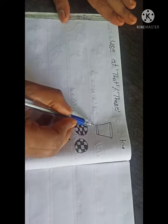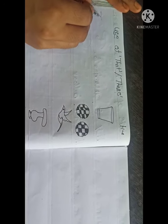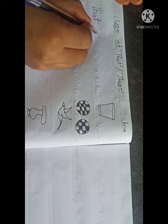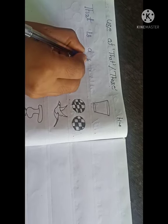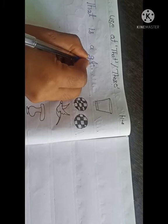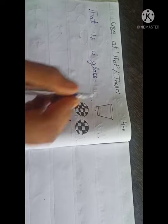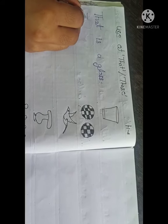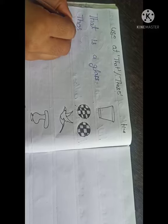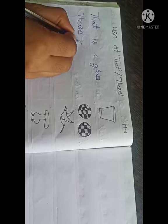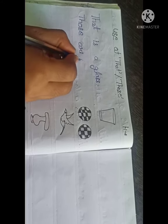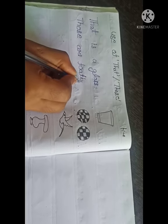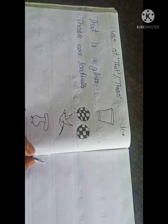First of all, what will we do? We will use that and those. That, T-H-A-T, that is a glass, G-L-A-S-S glass. Now one more thing is going on. And now this is our homework, we will use that and those. T-H-O-S-E those, A-R-E are, football, F-O-O-T-B-A-L-L, as football. Like this you have to do ahead, using that and those.